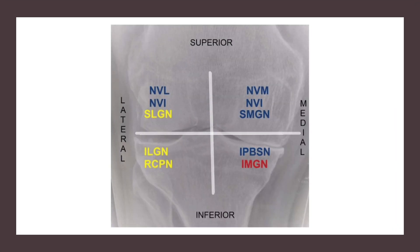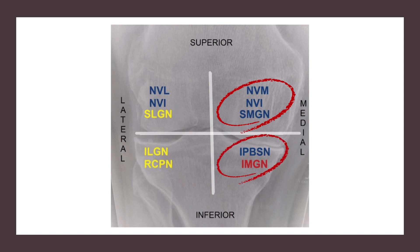I will review the articular branches by dividing them into four quadrants: medial superior, medial inferior, lateral superior, and lateral inferior quadrants.